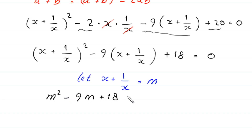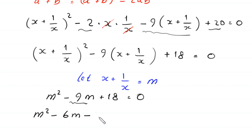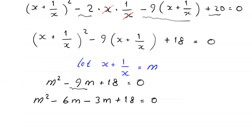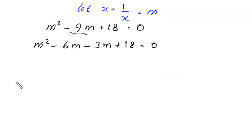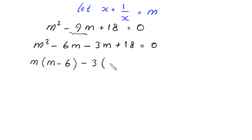So the equation becomes m squared minus 9m plus 18 equals 0. This quadratic is factorable: we split negative 9m as negative 6m minus 3m, giving m squared minus 6m minus 3m plus 18 equals 0. From the first two terms we factor out m, giving m(m minus 6), and from the last two terms we factor out negative 3, giving negative 3(m minus 6), equal to 0.